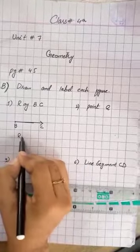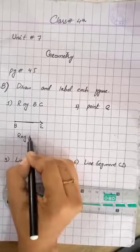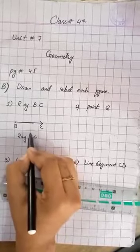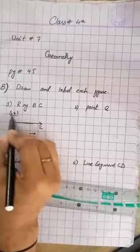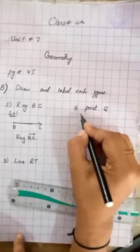Now, how do you draw the label? Ray BC. And you will draw a small arrow on C. Now, you will draw the solution. Here we will draw the solution.